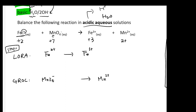Step two: balance all atoms. For the oxidation half-reaction, the atom is already balanced — one Fe ion on each side. For the reduction half-reaction, it is not balanced; there are more oxygens on the left. To balance oxygen in acidic solution, you add H2O. Since there are four oxygens, you add four H2O on the right side.